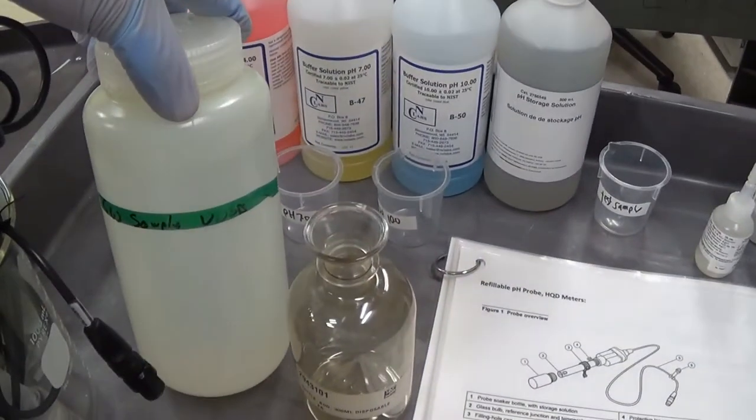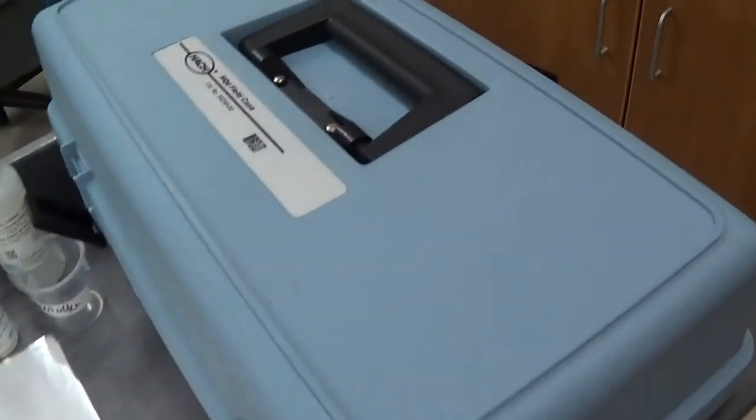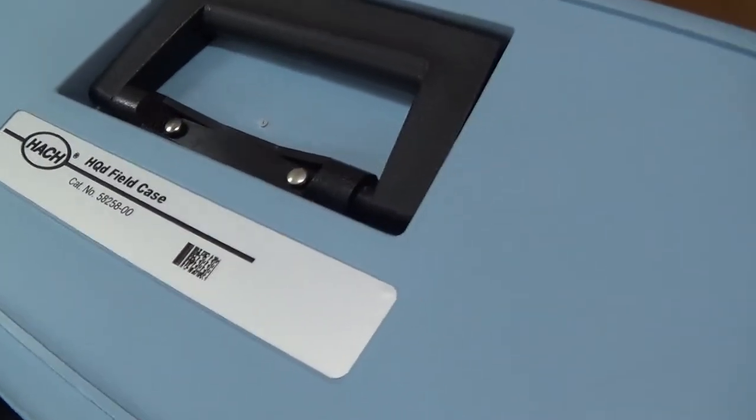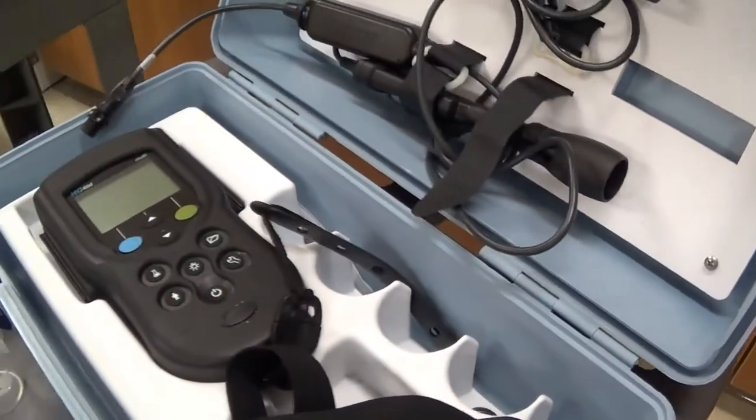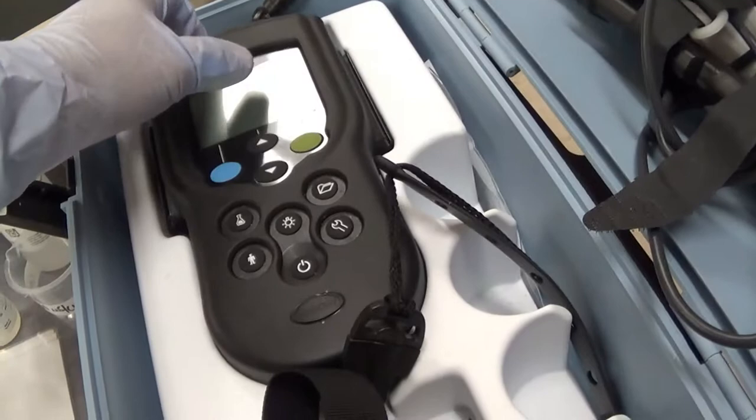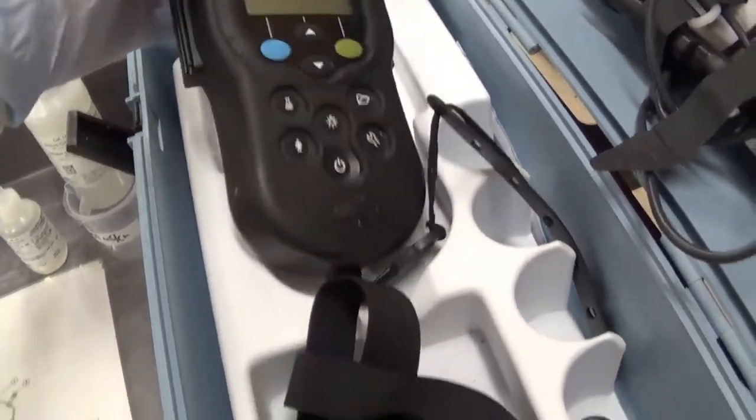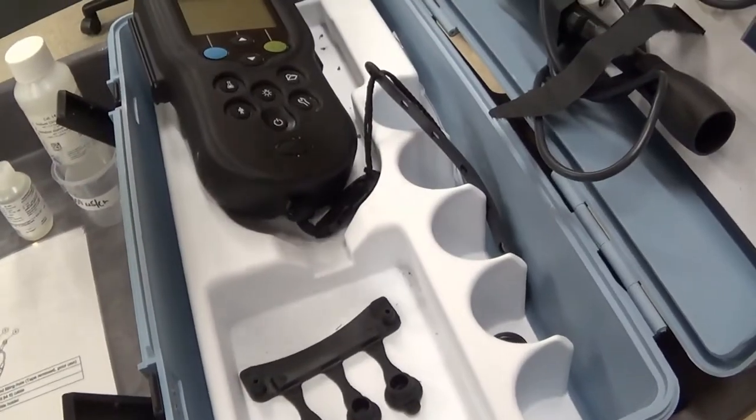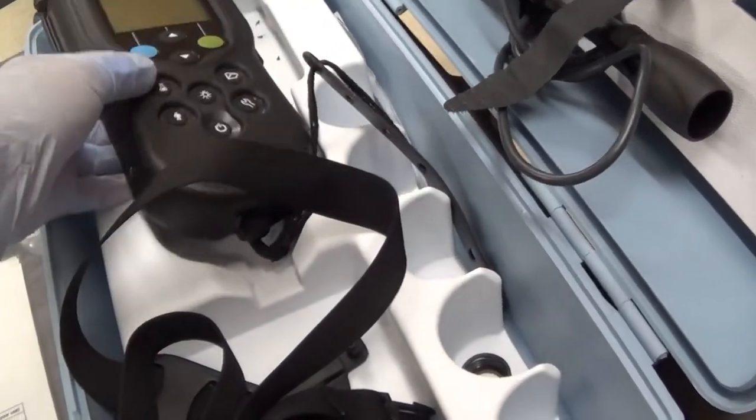We are going to test our well water from UWGB using our HAWC field kit. This kit you would normally take with you to sample. The kit comes with a meter in a nice protective case, and different straps you can use if you are out in the field.